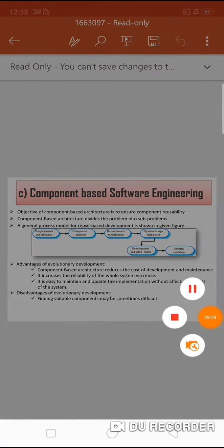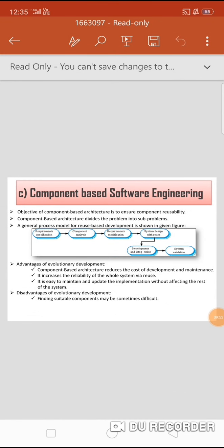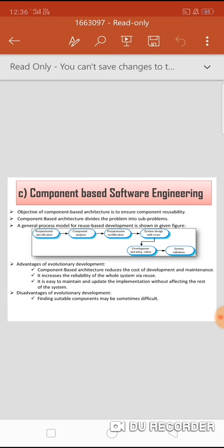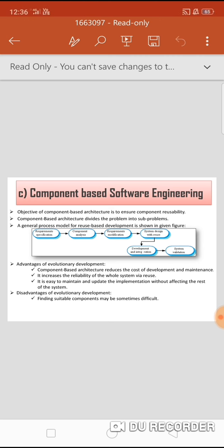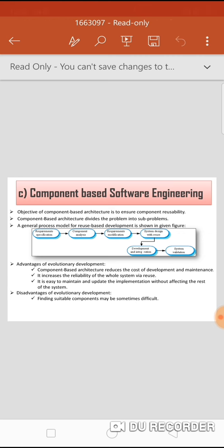The third type of model is component-based software engineering. Its objective is to ensure component reusability — we can reuse components that already exist. In component-based architecture, it divides the problem into sub-problems where each problem is associated with component partitions. There are several stages: component analysis, where as per the requirement specification, a search is made for components to implement it; if an exact match is not found, components providing partial functionality may be used.